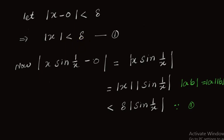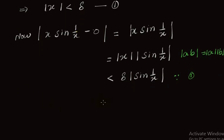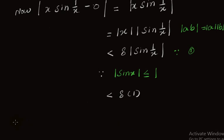We also know that the modulus of sin(x) is always less than or equal to 1, that is |sin(x)| ≤ 1. Using this relation, delta·|sin(1/x)| ≤ delta·1 = delta. Therefore |x·sin(1/x) - 0| < delta.